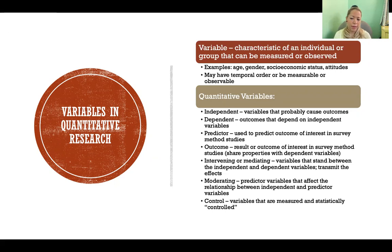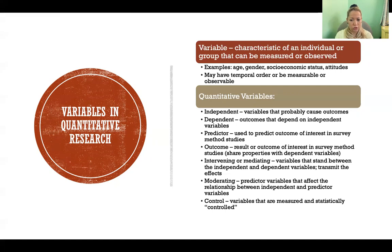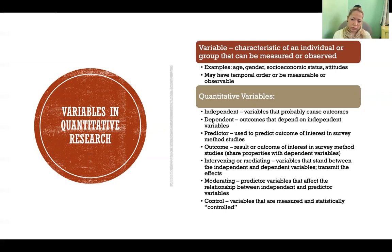Intervening or mediating variables are variables that stand between the independent and dependent variables. If we see that an independent variable has an effect on a dependent variable only when another variable is also present, that would be a mediating variable. The independent variable affects the mediating variable, which affects the dependent variable, but if we remove that mediating variable, the independent variable does not directly affect the dependent variable.